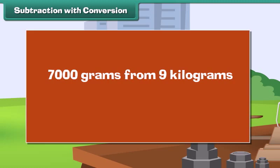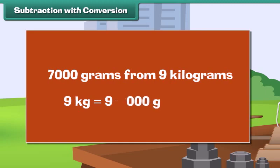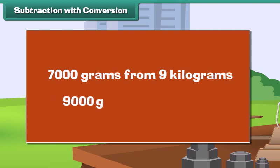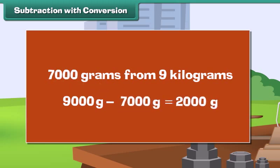9 kg is equal to 9000 grams. 9 kg minus 7000 grams equals 2000 grams.